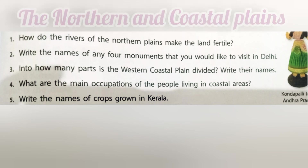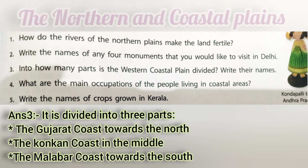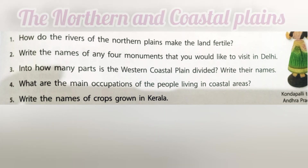Question 3: Into how many parts is the western coastal plain divided? Write their names. Answer: It is divided into three parts — first, the Gujarat Coast towards the north; second, the Konkan Coast in the middle; third, the Malabar Coast towards the south.